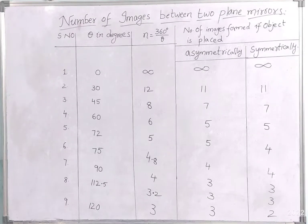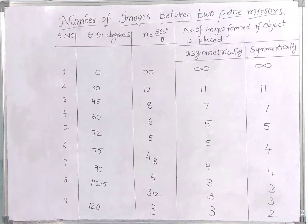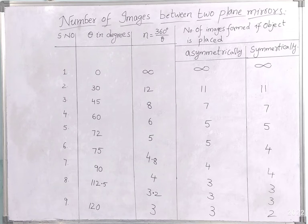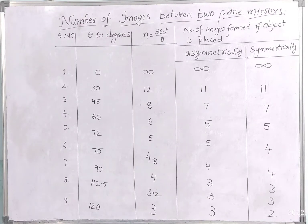Now let us go through this table. We can see nine situations. The first column shows the angle theta in degrees, the third column shows the formula n = 360/theta, and the fourth column is divided into two parts: number of images formed when the object is placed asymmetrically, and when placed symmetrically.